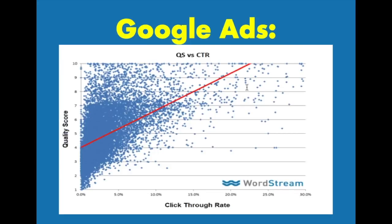This here is another graph from WordStream that shows the impact your click-through rate has on quality score and how they kind of meld together. You can see a higher click-through rate generally means a higher quality score. You really want to be above this red line — my goal is generally a quality score of 7 and about 3% click-through rate. What you want is to be in a high quality score, high click-through rate zone, so you want to be above this line.